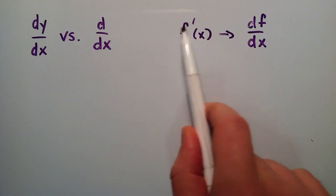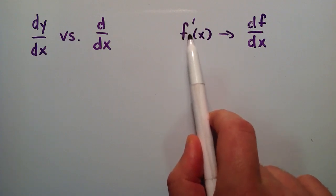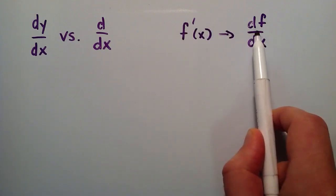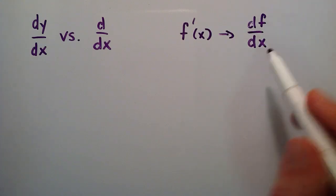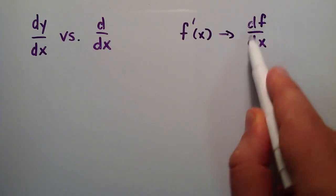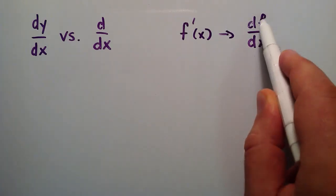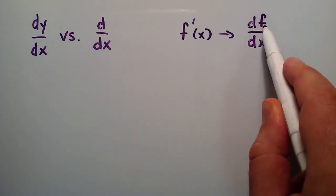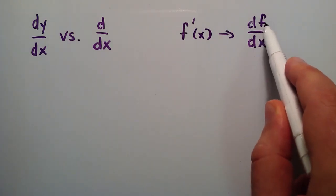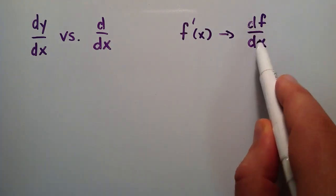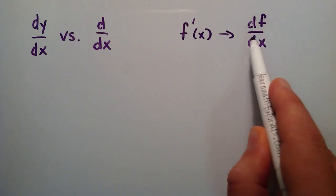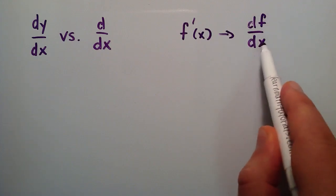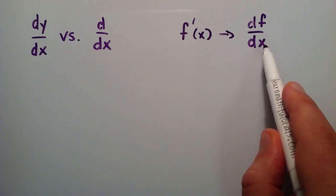So if you were to describe this exact same thing in Leibniz notation, it would look like df over dx. So the important parts of this expression, on top, the f is saying what function you're taking the derivative of. In this expression, you're saying you're taking the derivative of the function f, and then this x variable down here means that you're taking it with respect to the variable x.